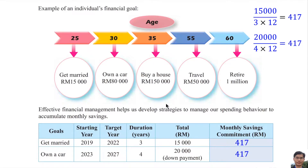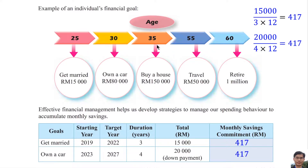In my opinion, a man needs to buy a house and own a car before a lady is willing to marry him. The average price of a house in Malaysia is about 300,000 ringgit, so 100,000 ringgit is very cheap. If there is a house at such a low price, he still needs to have 15,000 ringgit as a down payment to buy the house within five years.